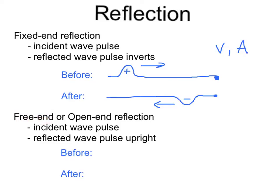But what if that end were a free end or open end or in the pulse activity loose end? Then that incident wave pulse would reflect and stay upright. So before we would have this positive wave pulse coming down, you would encounter an open end or free end and as it encounters that and reflects off, it's going to stay on the same side. It'll still be positive. It might be a little less positive in amplitude due to some energy loss during that reflection process.